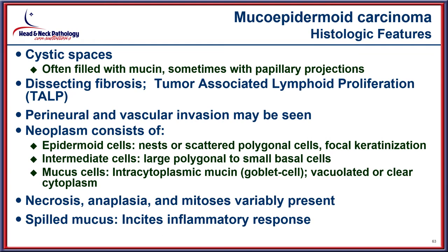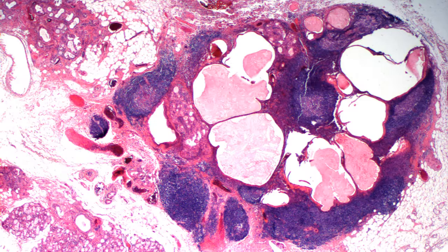Cystic spaces are often filled with mucin. A well-developed tumor-associated lymphoid proliferation is very commonly present and should not be misinterpreted as a lymph node. Perineural and lymphovascular invasion are usually seen. By definition the tumor must have three components: epidermoid cells (scattered polygonal cells), intermediate cells (large, resembling basal cells), and mucocytes with intracytoplasmic mucin. Necrosis, anaplasia, and mitotic figures contribute to overall tumor grade.